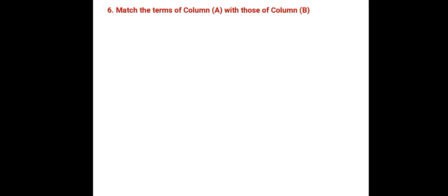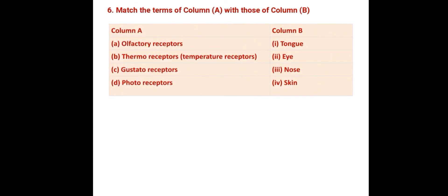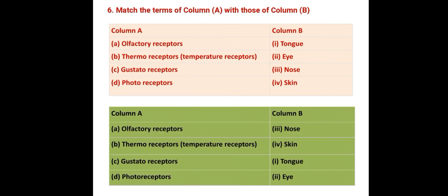Match the terms of column A with those of column B. Olfactory receptors are located in the nose and help us sense different smells. Thermoreceptors are located in the skin. Gustatory receptors are in the tongue and help us detect different tastes. Photoreceptors are located in the eye. So the answers are: olfactory receptors — nose; thermoreceptors — skin; gustatory receptors — tongue; photoreceptors — eye.